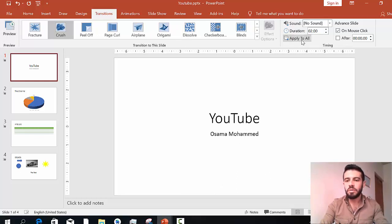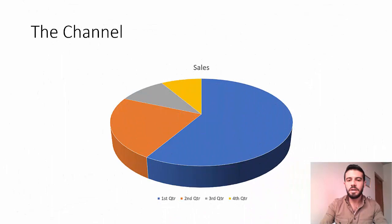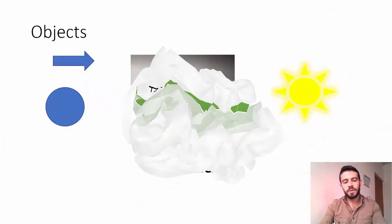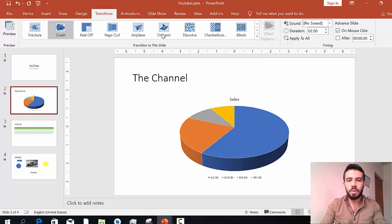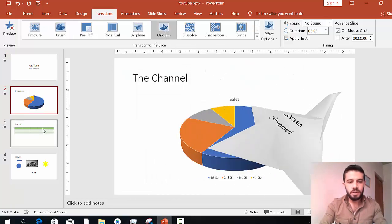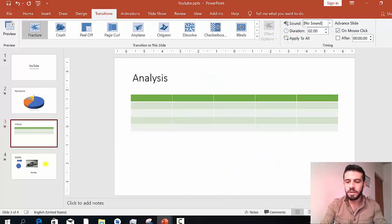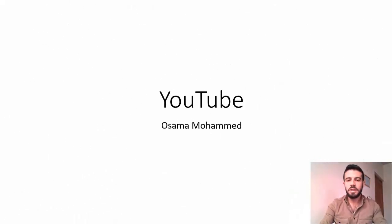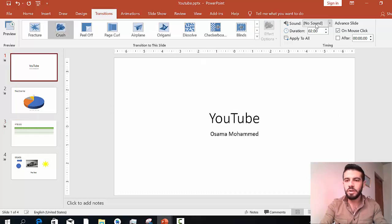You can click 'Apply to All' to apply the transition to all slides. When I run the display mode, in the first slide and moving to the next slide, you can see the transition applied. You can also add a different transition to each slide — for example, apply one transition to slide one and a different one to slide two or three.